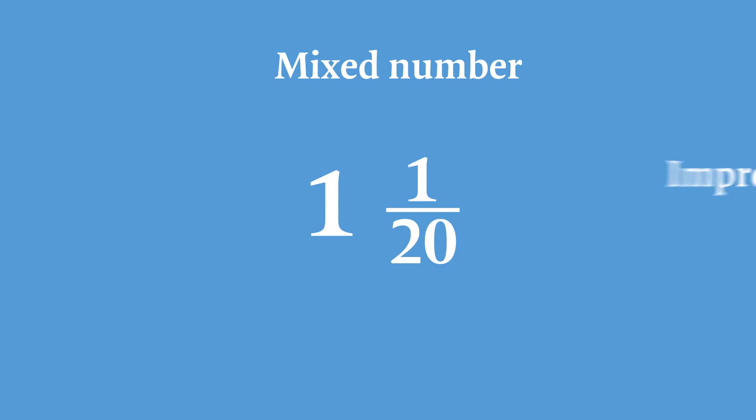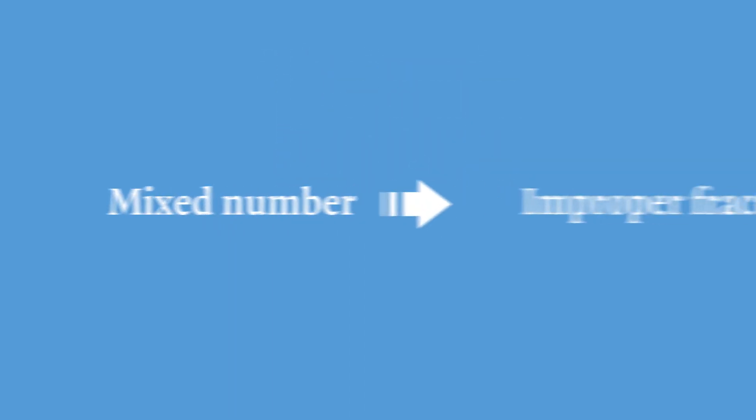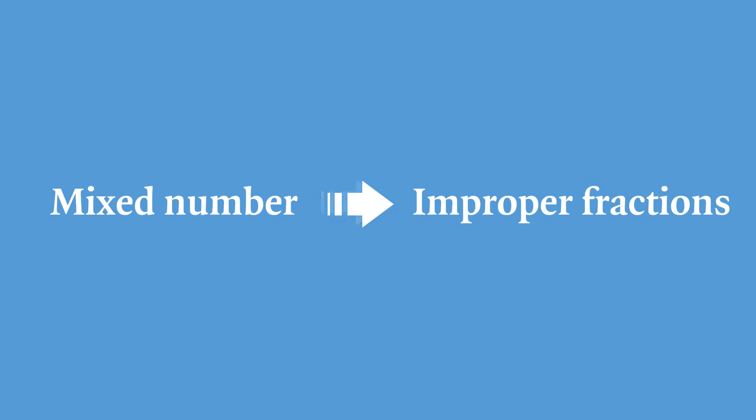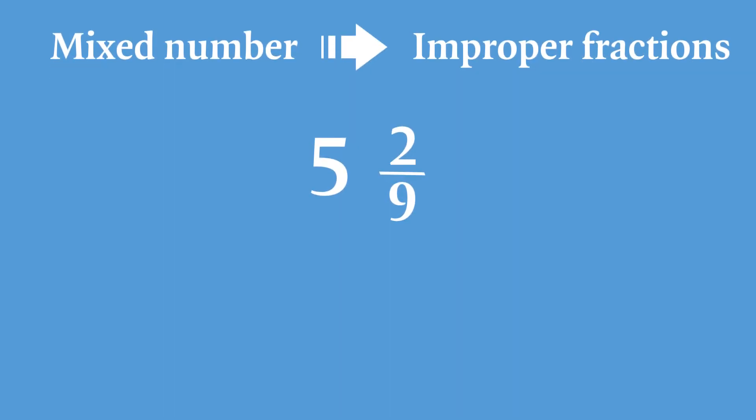But can we convert mixed numbers into improper fractions? Certainly! All you have to do is multiply the whole number by the denominator and add the answer to the numerator, like this. We say 5 multiplied by the denominator, which is 9. The answer is 45. We add the numerator, which is 2. So 45 plus 2 equals 47.